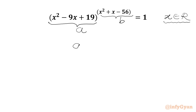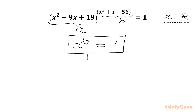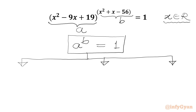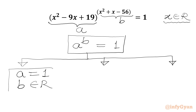So we have A to the power B equal to 1 form. In LHS we have A to the power B. There are three cases where we get A to the power B equal to 1. Case 1: where base is equal to 1 and the exponent should be a real number — we get RHS 1. For example, 1 to the power 50 is always equal to 1, and 50 is a real number.